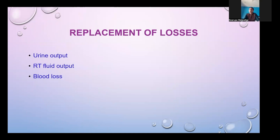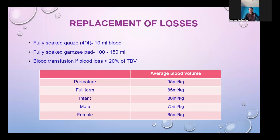For replacement of losses, urine output, NG fluid output, and blood loss are all considered. A fully soaked 4×4 gauze contains approximately 10 ml of blood; a fully soaked gauze pad contains 100–150 ml. Blood transfusion should be considered when total blood loss exceeds 20% of the total blood volume.